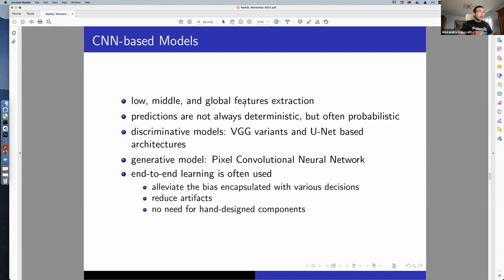The discriminative ones are VGG and U-Net, and one that I would suggest people to look into in the generative world is the Pixel Convolutional Neural Network.